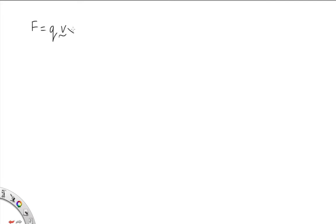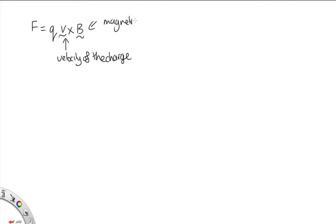The force felt by a moving charge in a magnetic field is given by F = qv × B, where v is the velocity of the charge and B is the magnetic field. This is a cross product, so it depends on the direction of the velocity and of the magnetic field.